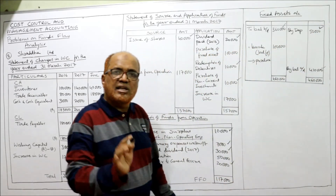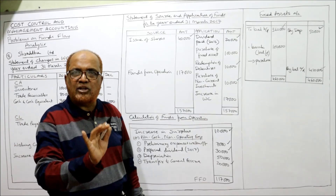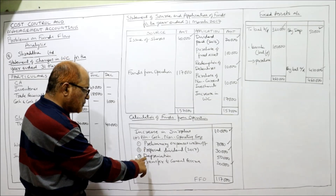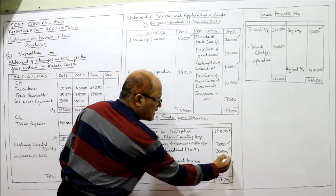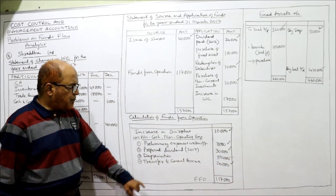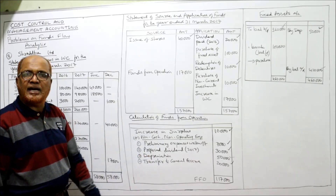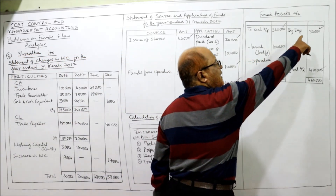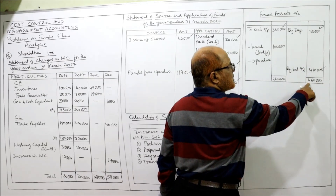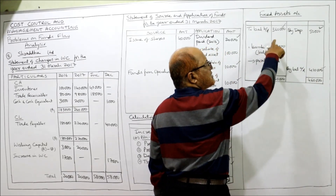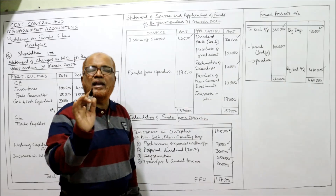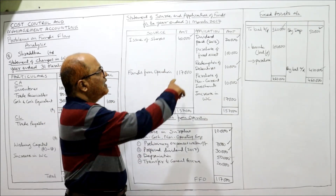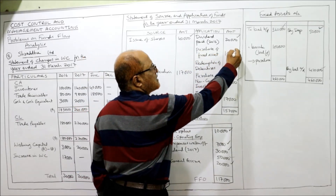Opening fixed assets account: last year three lakh sixty thousand, current year four lakh ten thousand. Depreciation provided during the year fifty thousand — by depreciation fifty thousand as non-cash item. No sale of fixed assets, only purchase. Total on credit side: four lakh ten thousand plus fifty thousand equals four lakh sixty thousand, minus three lakh sixty thousand equals one lakh — purchase of fixed assets one lakh on application side.